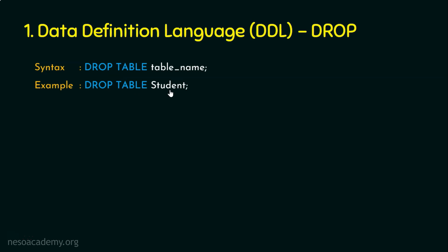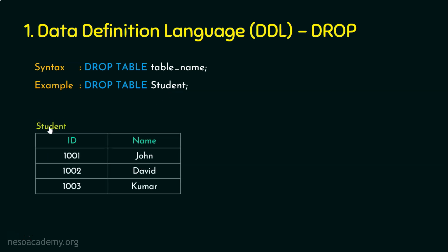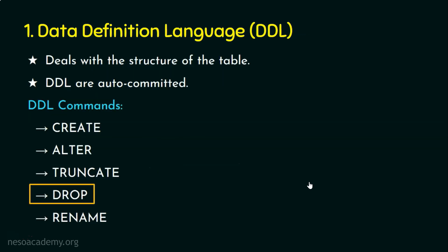When we execute DROP TABLE student on a table containing columns id and name with existing data, the output shows nothing — the table is completely vanished from memory. DROP removes the whole table including its structure, indices, data, and more. Unlike TRUNCATE, which only removes rows while keeping the table structure, DROP destroys everything. Since DROP is also a DDL command, it is auto-committed and cannot be rolled back.